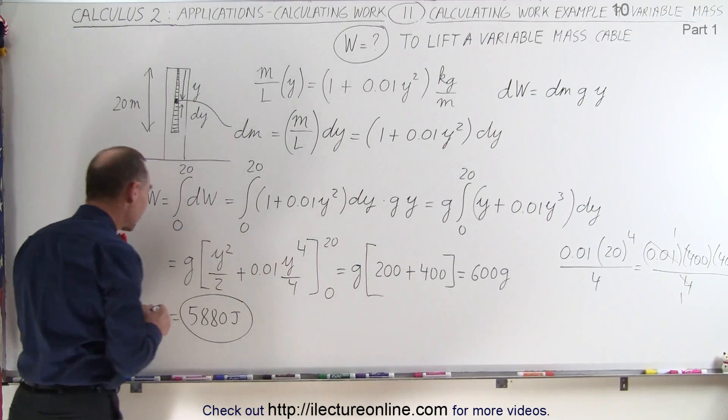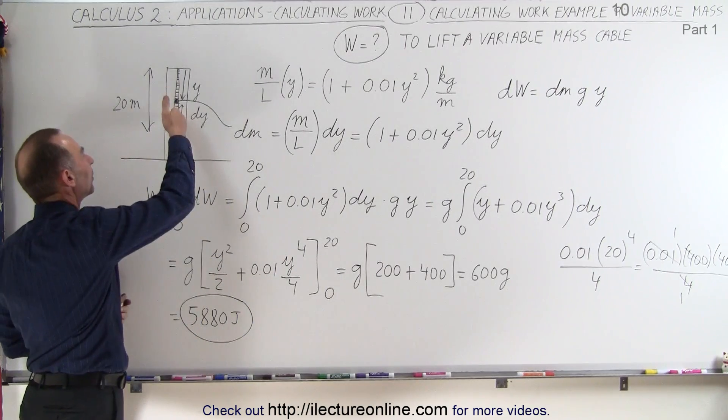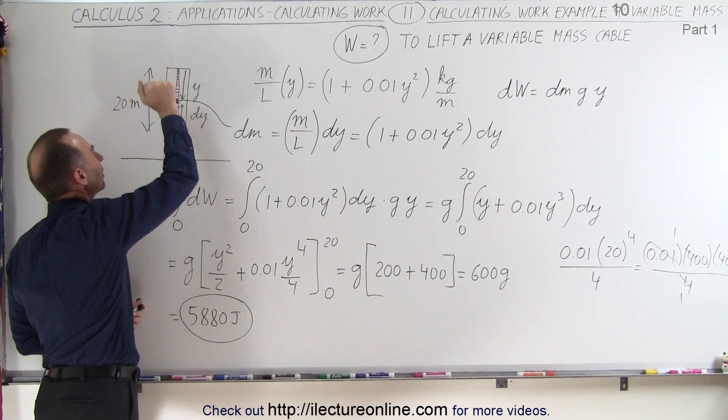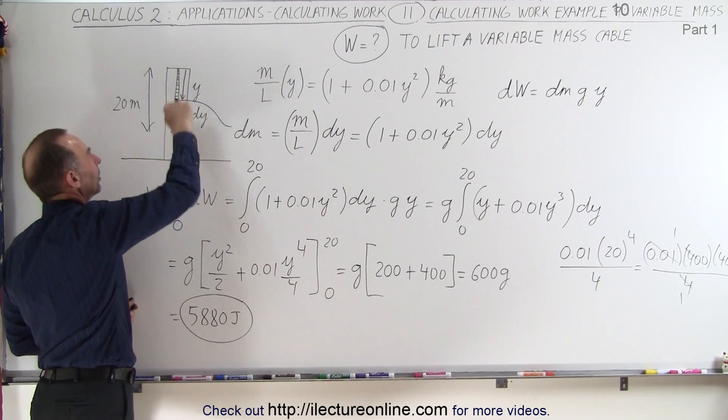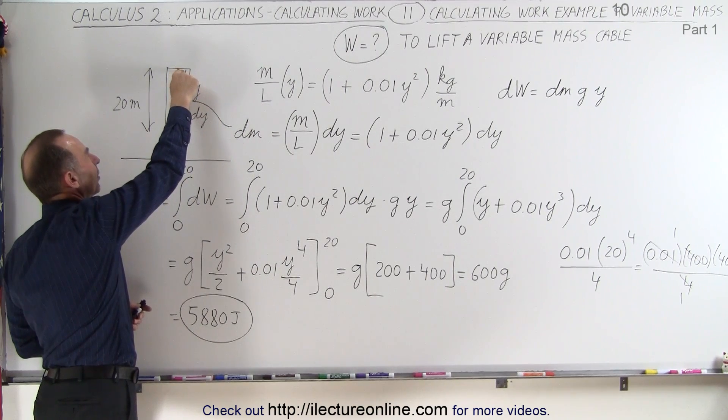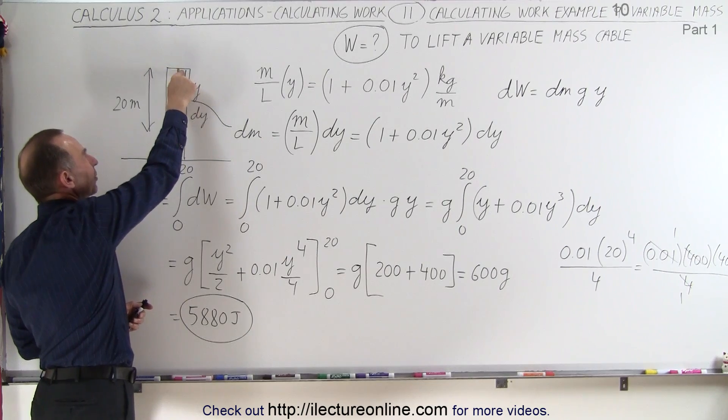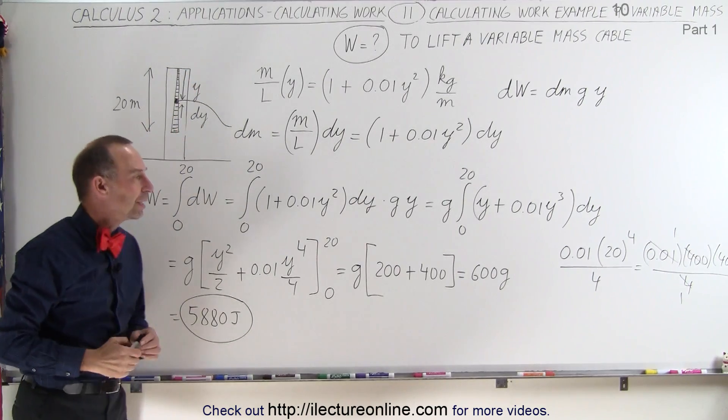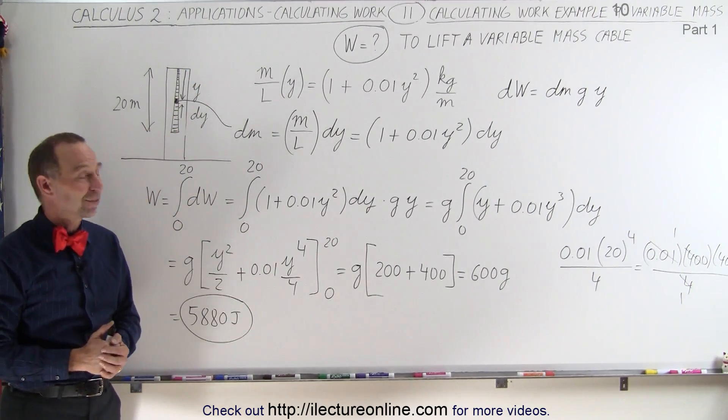And that's how much work it will take to take this variable mass cable and lift it to the top of this building. 20 meter long cable. The mass changes from 1 kg per meter at the top to 5 kg per meter at the bottom. And that's how it's done.